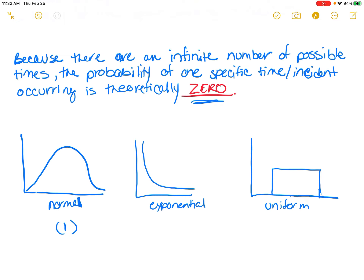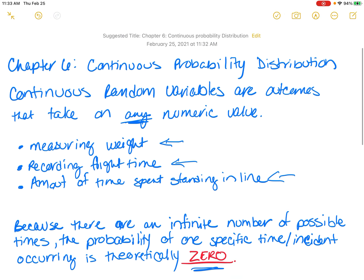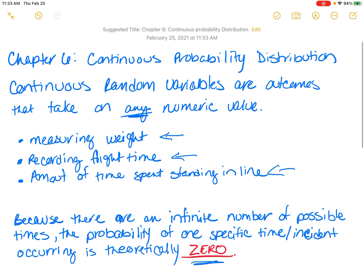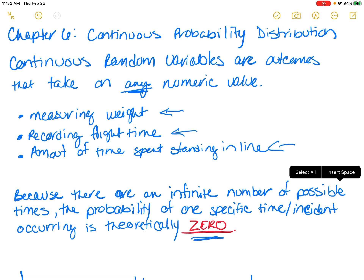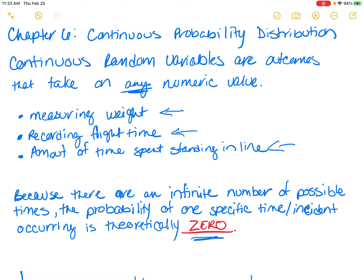We're also going to cover three different types of continuous distributions. One is the normal probability distribution — and once we get past this chapter, we are going to focus almost solely on normal distribution. The second is exponential, and the third is uniform. This is just a quick introduction, and I have a series of videos to follow that focus on normal, exponential, and uniform distribution.